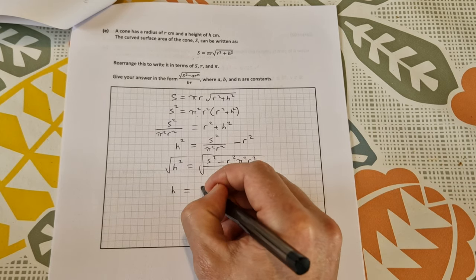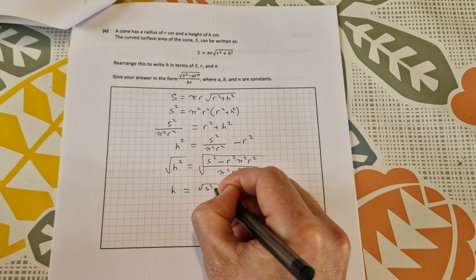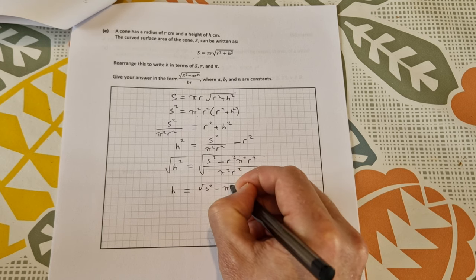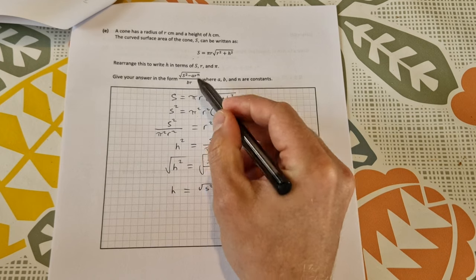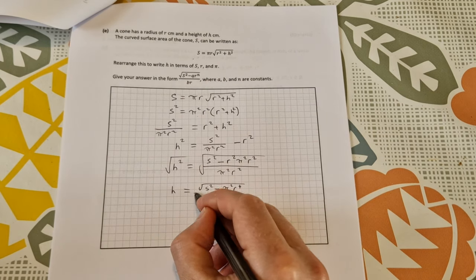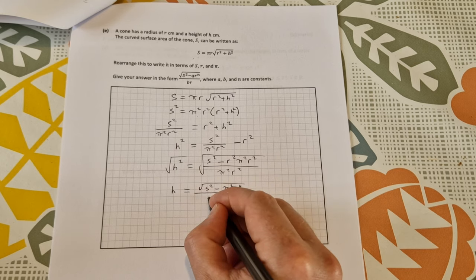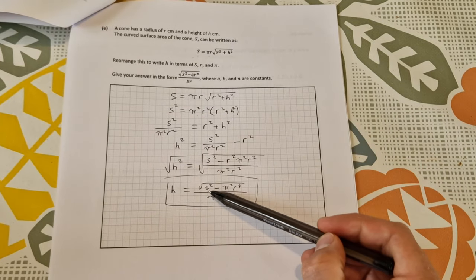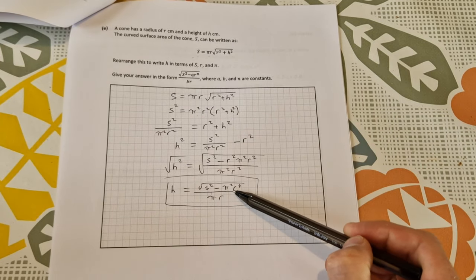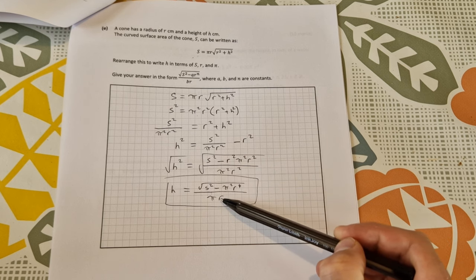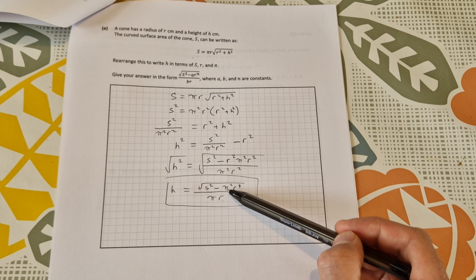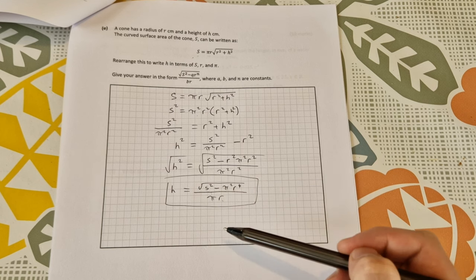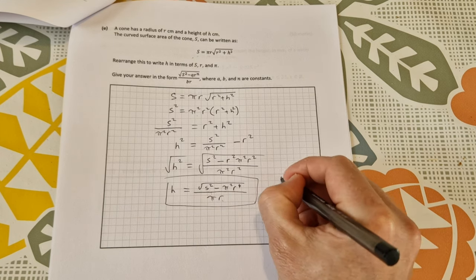gives me on the top the square root of s squared minus r to the power of 4 pi squared. Or you can put the pi squared first, pi squared r to the power of 4 because they want a or n. And that is over the square root of pi squared r squared, which is pi r. So that is the final form that they're looking for. We have the square root of s squared minus a r to the power of n over b r. So a is pi squared, b is pi, and s is there as well. So we have h on its own. And that is worth 10 marks.